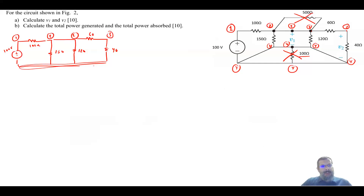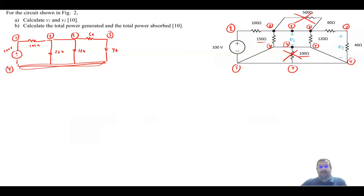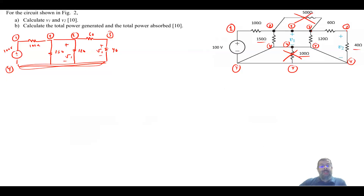And all of this is node four. If you want to make sure you didn't miss anything, pick any random resistance — for example, the 150 is between two and four, and the 40 is between three and four. V1 is the voltage between two and four, and V2 is the voltage across this resistance between three and four. This circuit is much more manageable — it has three loops and three nodes plus a reference. I will solve it using circuit reduction.